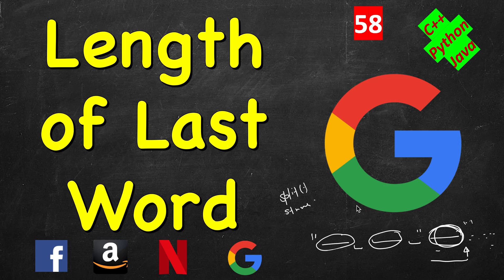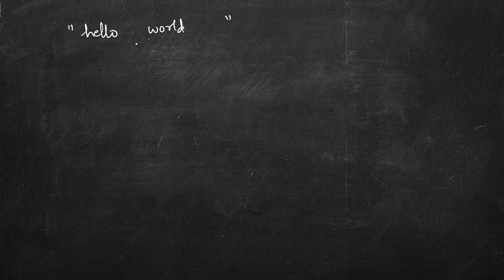Either we encounter the first space from that point, since there are some spaces after it, or we reach the beginning — both cases we stop and return the length. Let's take an example: say we have 'hello', then a space, then 'world', and then maybe six or seven trailing spaces.